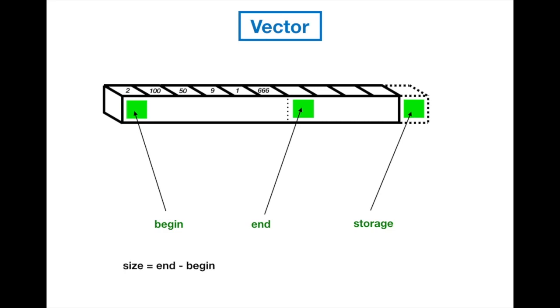So the current size of the vector I'm having now would be n minus beginning, which is six, and the real size in the memory would be the storage minus the beginning.